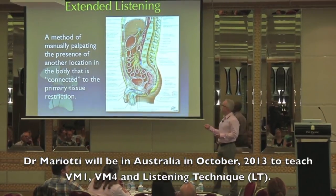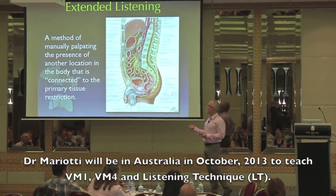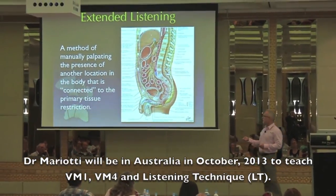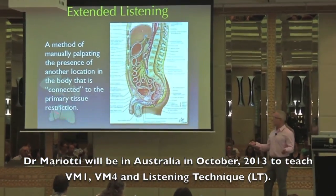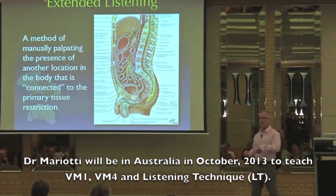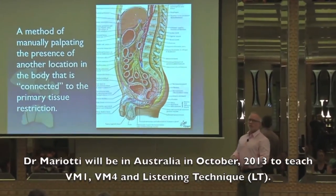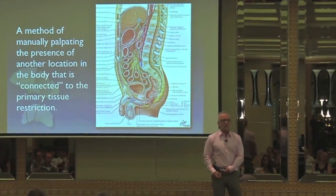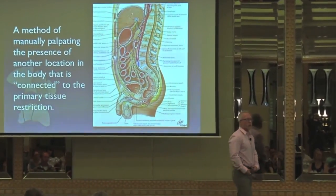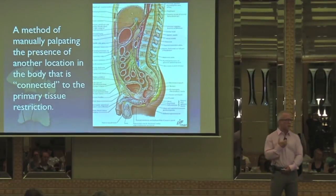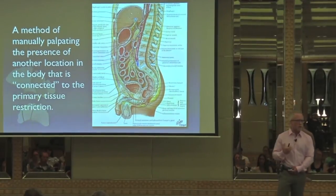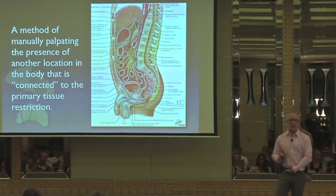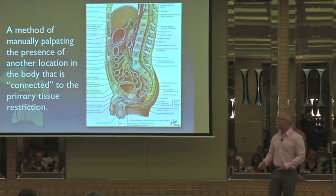Extended listening is a method of manually palpating the presence of another location in the body that's connected to the primary issue. So you've got an area — let's say the cecum — and you want to know if there's some other structure, some other organ, some other place where that tissue is creating a line of tension to.